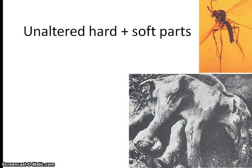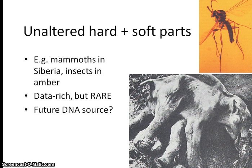Now I want to talk about different types of fossils. The first type is unaltered hard and soft parts, meaning the whole organism is preserved — soft tissue and hard tissue. These are super data-rich but even more rare. The whole premise of Jurassic Park is based on this idea: a mosquito ate dinosaur blood, got buried in amber, and became a fossil — a potential future DNA source.